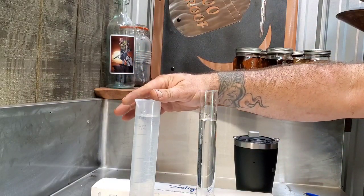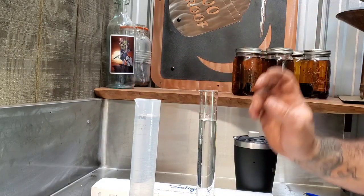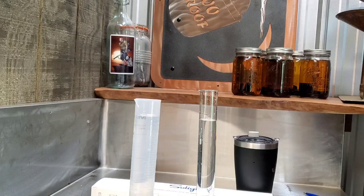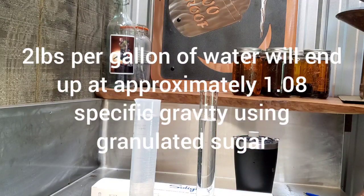In this cylinder, nothing but water. In this cylinder, I have a simple sugar wash set up. Use about two pounds per gallon, give or take, when I made this up.